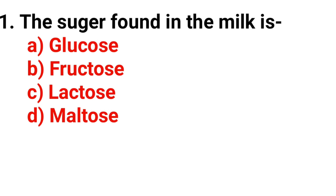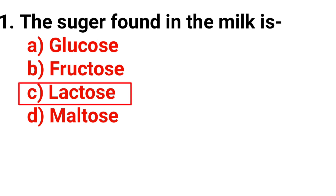Question number one: The sugar found in milk is — option A glucose, option B fructose, option C lactose, option D maltose. The answer is option C, lactose.